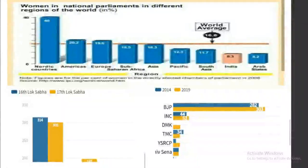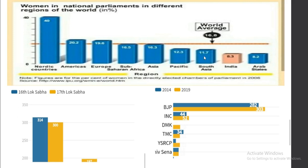We shall continue with women's representation in the parliament. We were discussing how difficult it was and how the situation has improved. If you see your book, you have data showing different countries' representation of women. India is at 8.3, not even an average compared to the whole, so the representation of women in the parliament is much, much lower.